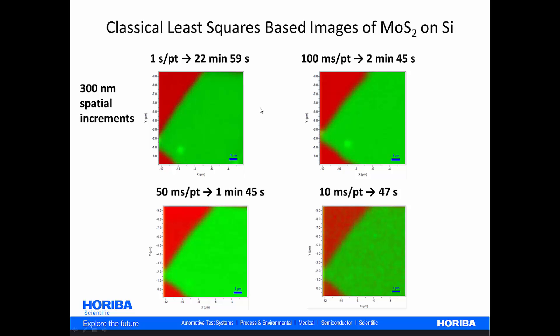So, just take in for a moment the difference here. We're talking about an image that required 23 minutes to generate here. And down here, 47 seconds. That's a pretty substantial improvement in speed for being able to generate the images.